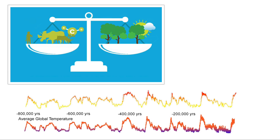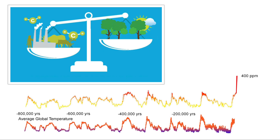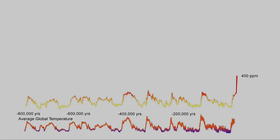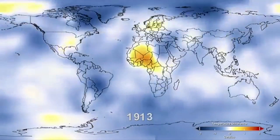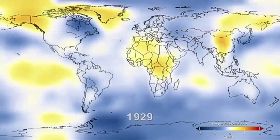Carbon levels relate very closely to global temperatures, as you can see from temperature data over the same time period. However, since the industrial revolution, human activity has dramatically increased the amount of carbon being released, meaning the carbon cycle is becoming increasingly out of balance.